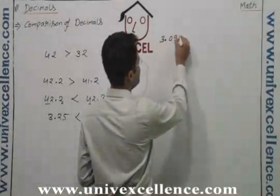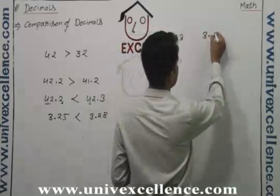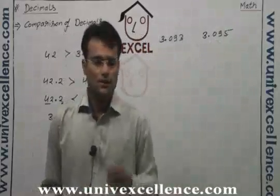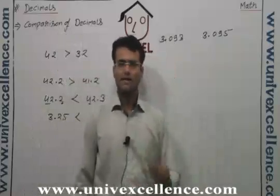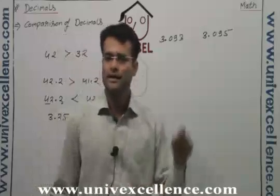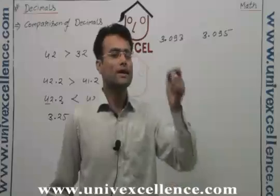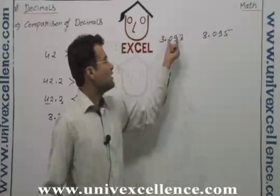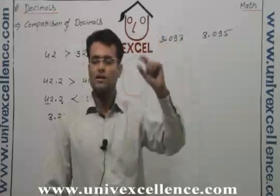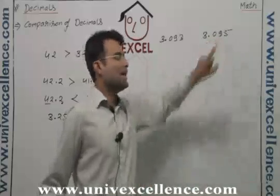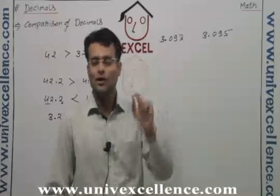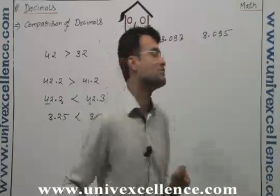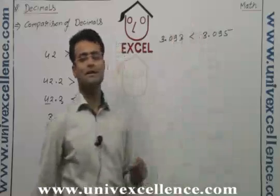Consider 3.093 and 3.095. Before the decimal it is 3 and 3, equal. At the tenths place it is 0 and 0, equal. At the hundredths place it is 9 and 9, equal. At the thousandths place it is 3 and it is 5 — that means 93 parts out of 1000 versus 95 parts out of 1000. Obviously 95 parts is greater, so put a greater-than sign with 3.095 being larger.